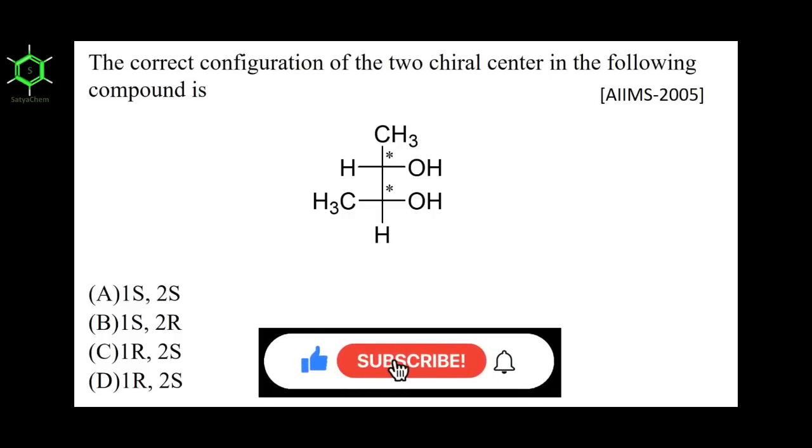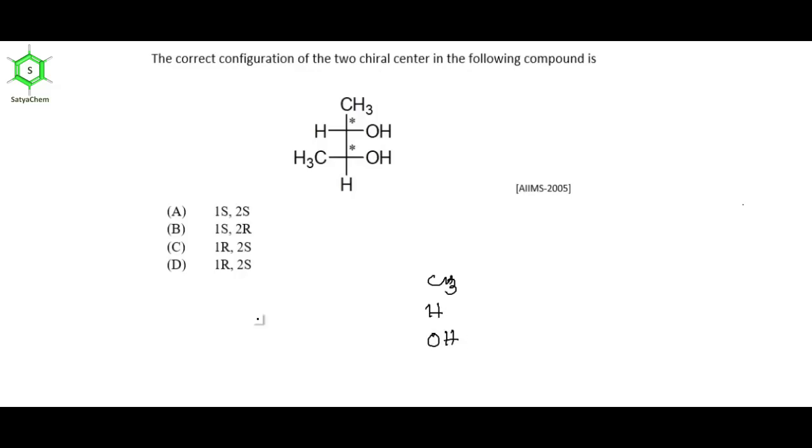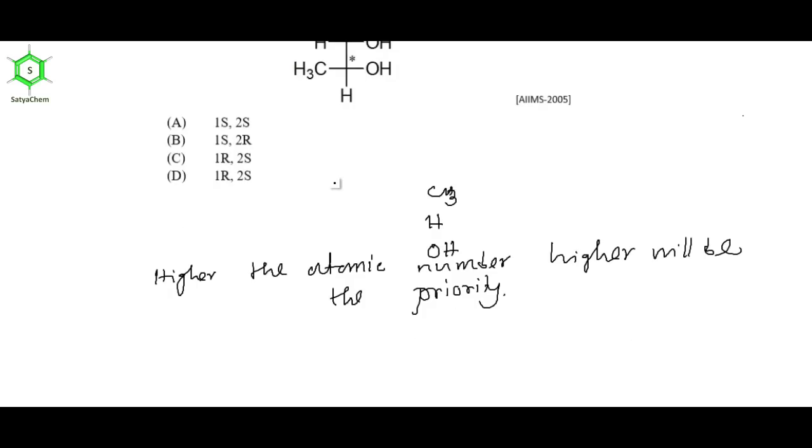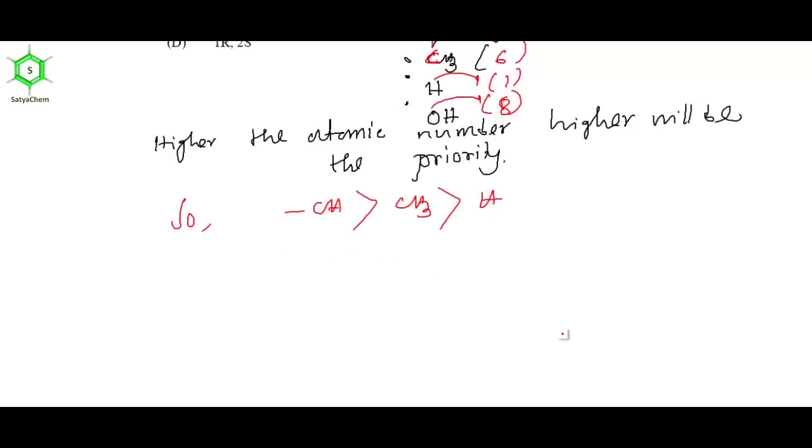Let's learn a new trick to determine RS configuration. This compound contains CH3, hydrogen, and hydroxyl groups. We know: higher the atomic number, higher the priority. Here, atomic number of carbon is 6, hydrogen is 1, and oxygen is 8. So the priority sequence is hydroxyl group > CH3 > hydrogen.